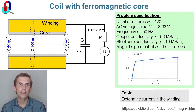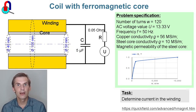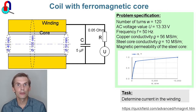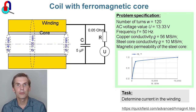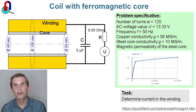Coil with thermo-magnetic core. The solenoid consists of the coil winding and a thermo-magnetic core. The core permeability depends on the magnetic field strength — you can see the pH curve here — and the coil is connected to the AC voltage source.